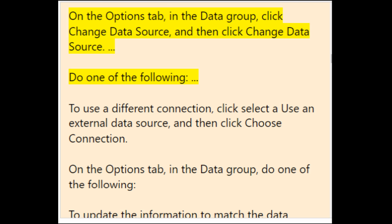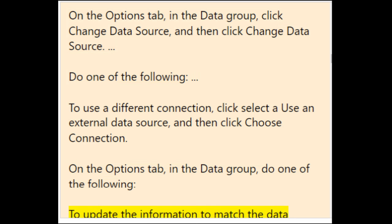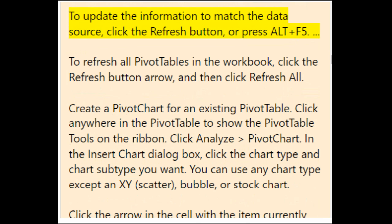On the Options tab in the Data group, to update information to match the data source, click the Refresh button or press Alt+F5. To refresh all pivot tables in the workbook, click the Refresh button arrow and then click Refresh All.